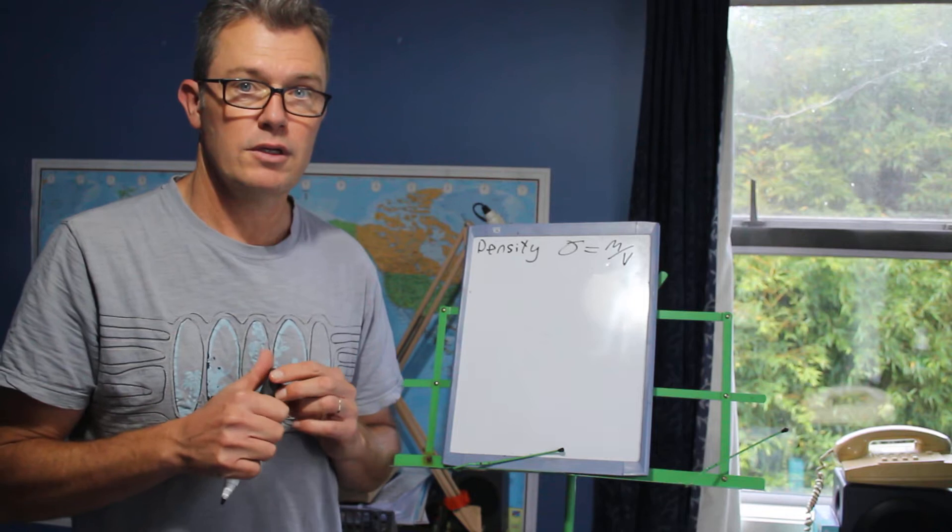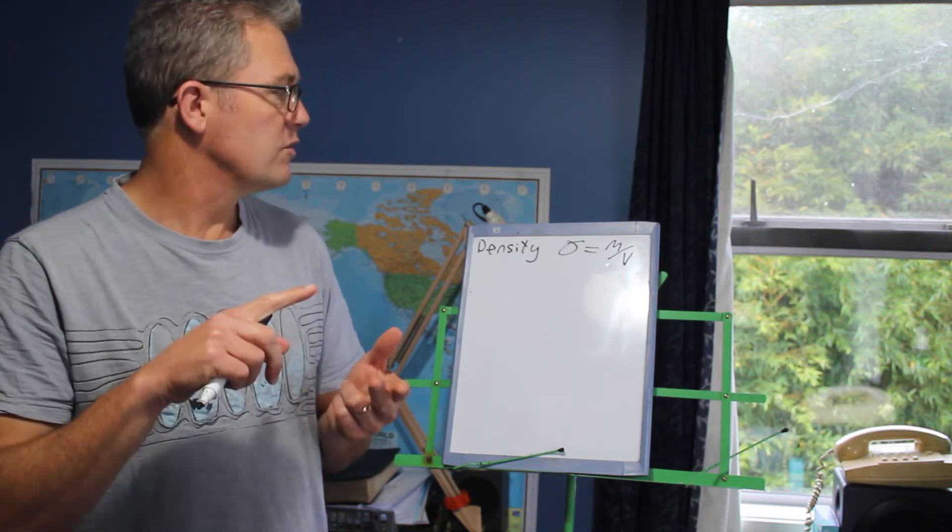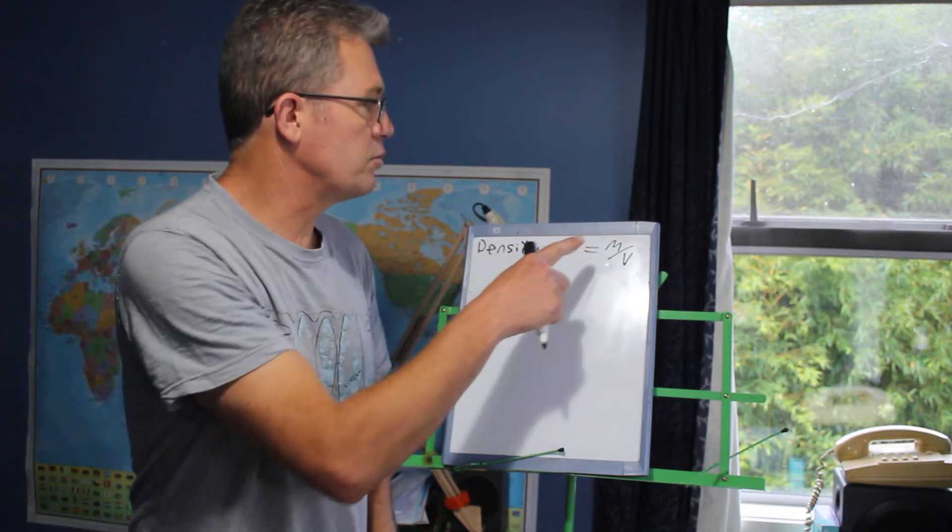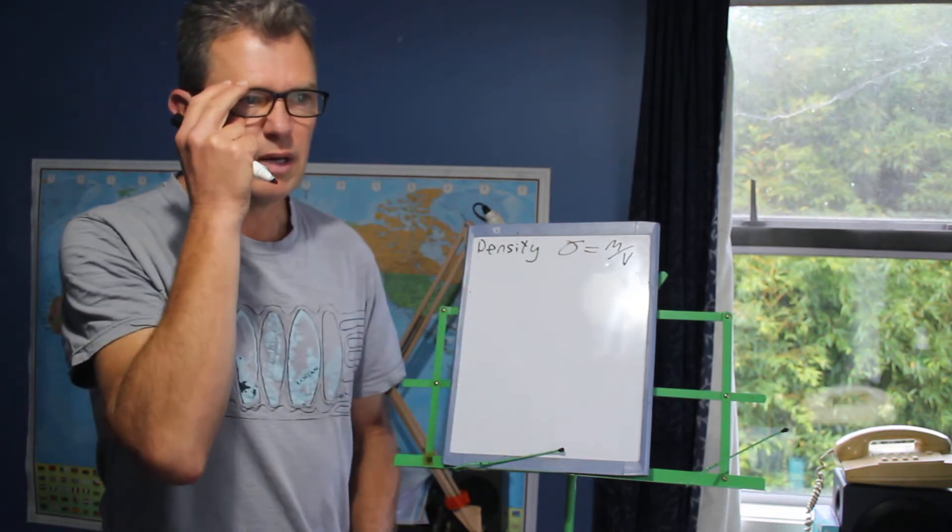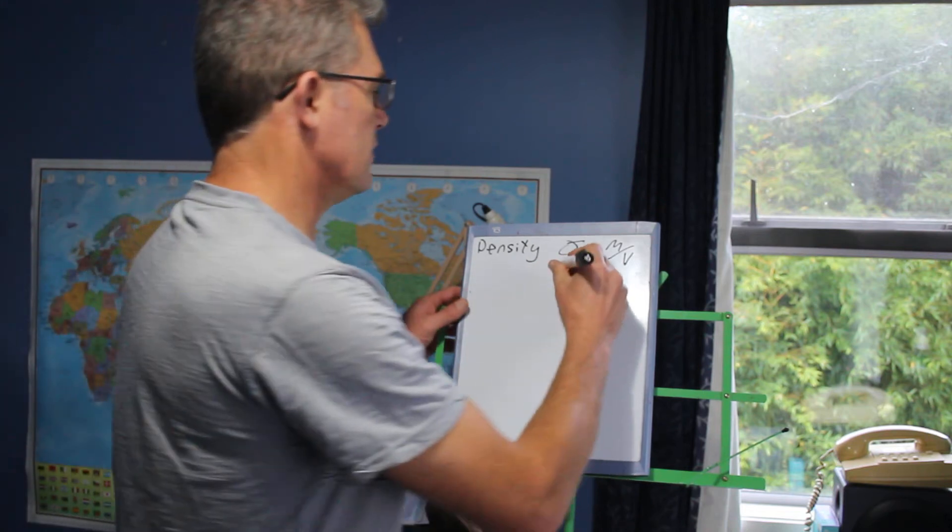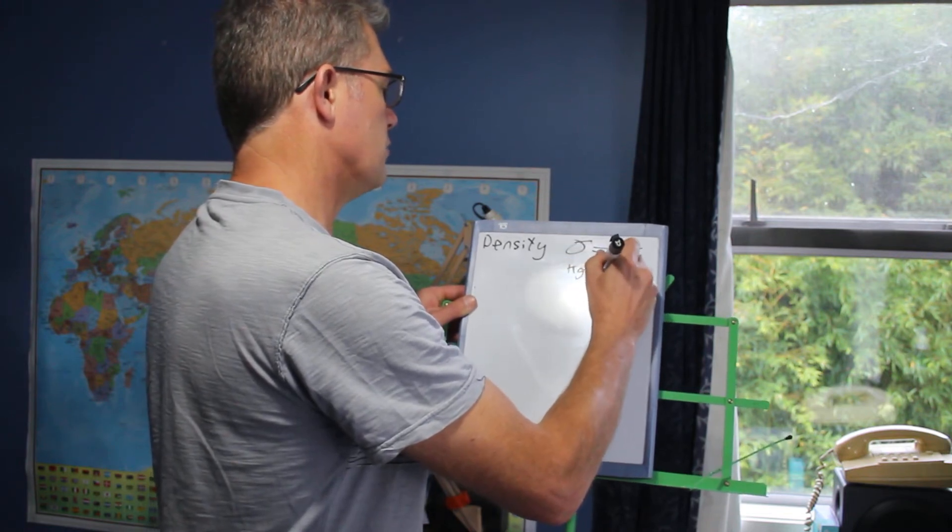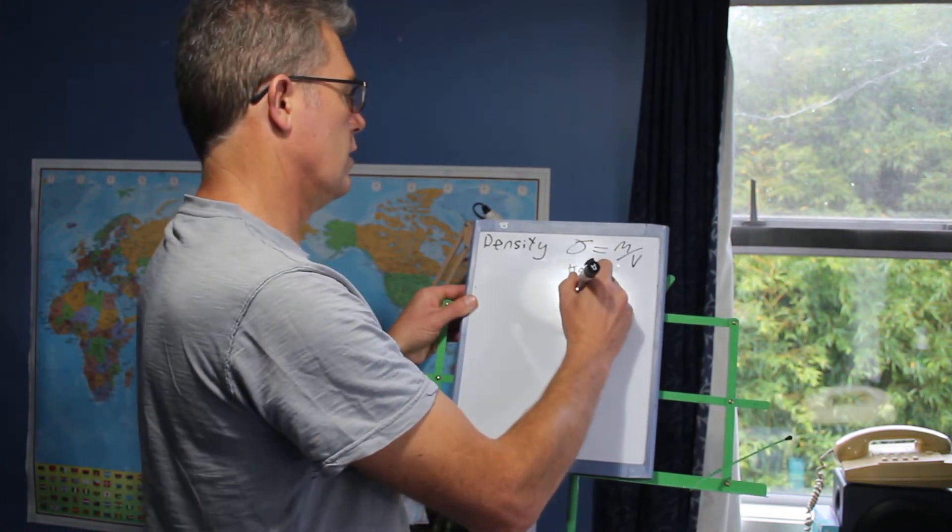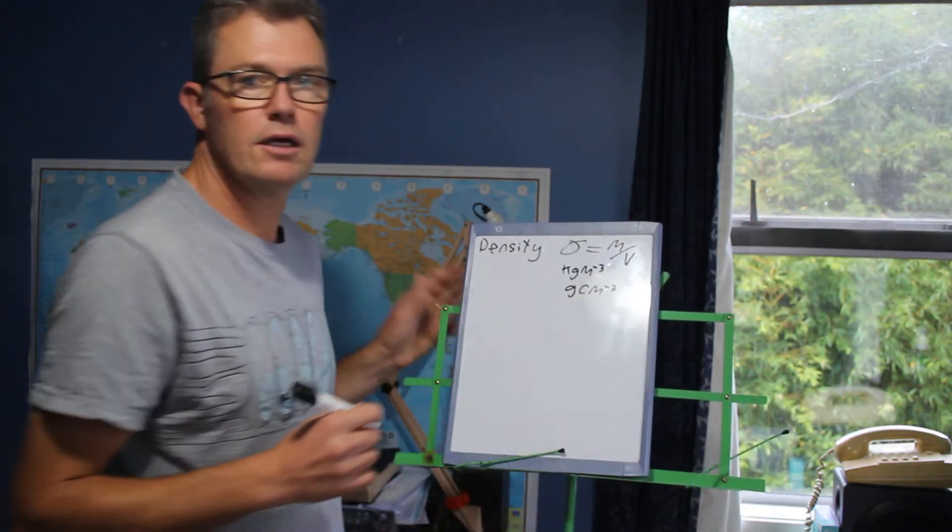Mass per unit volume. It's the proper technical definition. Mass per unit volume. So the units would be kilograms per cubic metre or often grams per cubic centimetre. So we'd write the units as kilograms metres minus three or grams centimetres minus three. Okay. That's density.